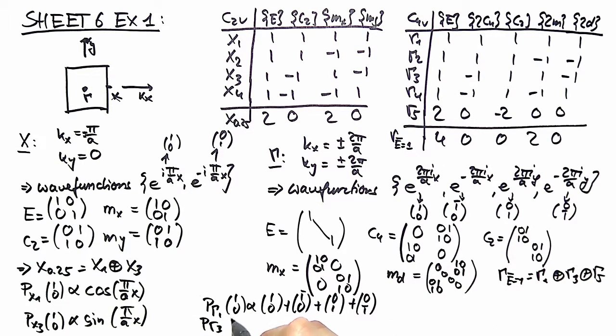Projecting onto gamma 3 and doing a similar calculation gives you e^(-2πix/a) minus e^(i2πy/a).